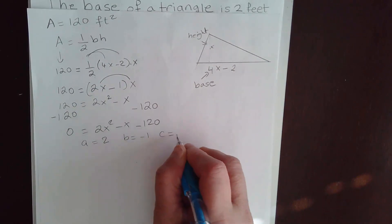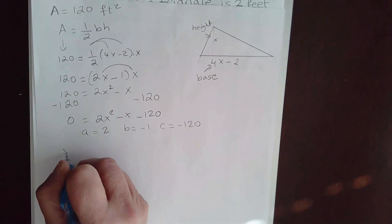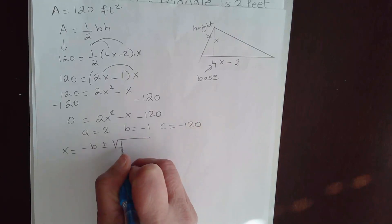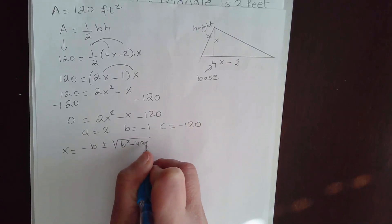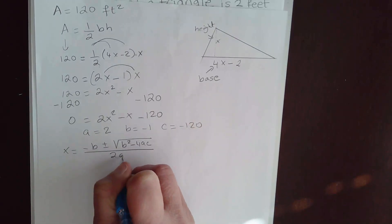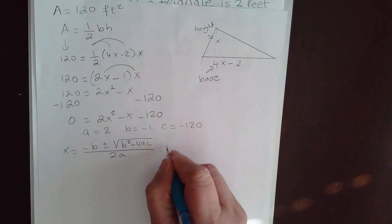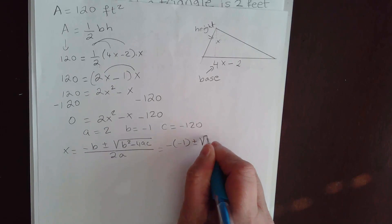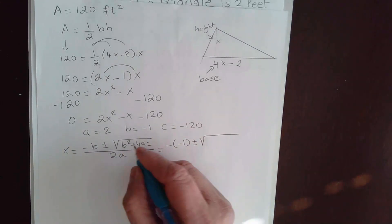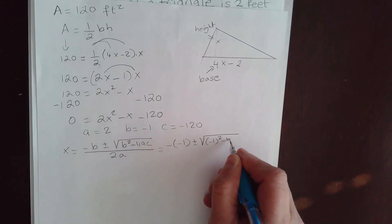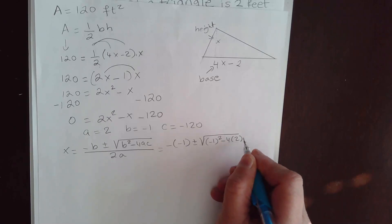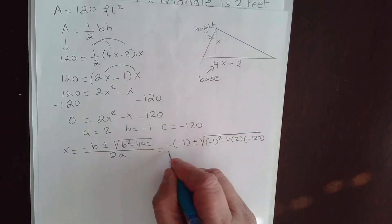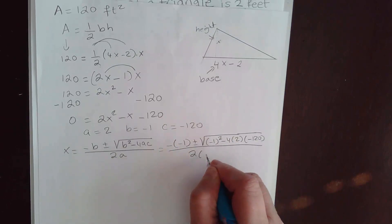Remember the formula is X equals negative B plus or minus square root of B squared minus 4AC over 2A. So negative B, B is negative 1 plus or minus square root of B squared. So it's negative 1 squared minus 4 times A is 2 times C is negative 120 over 2 times A, which is 2.